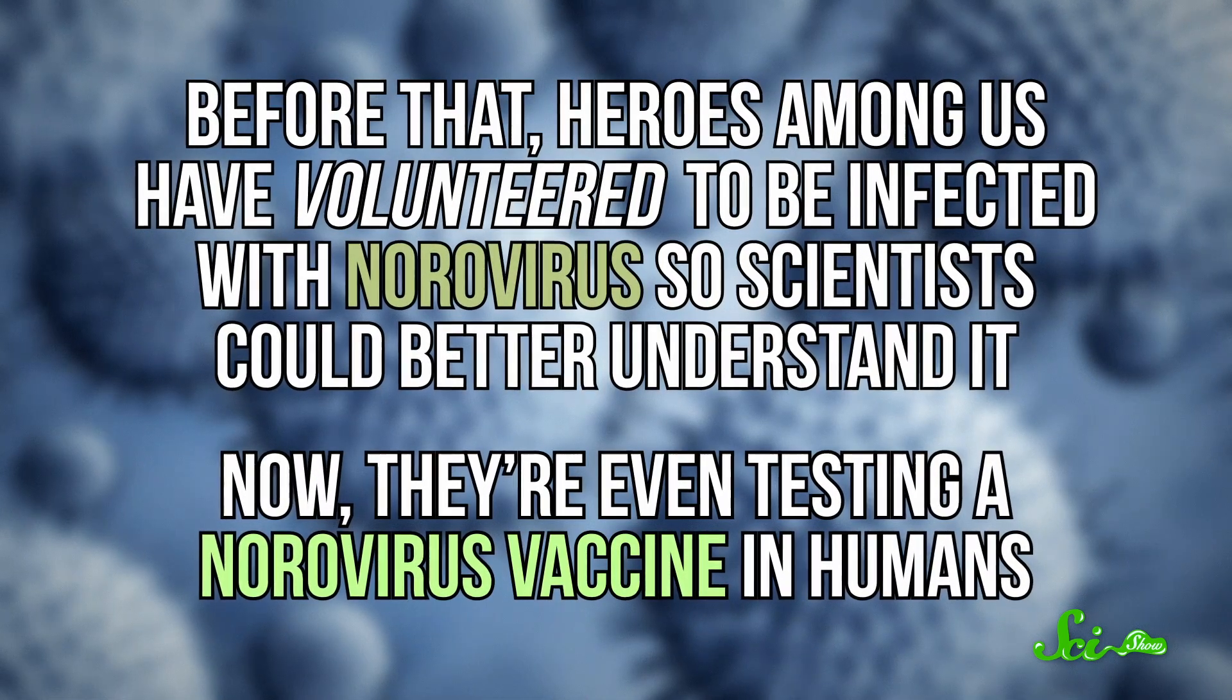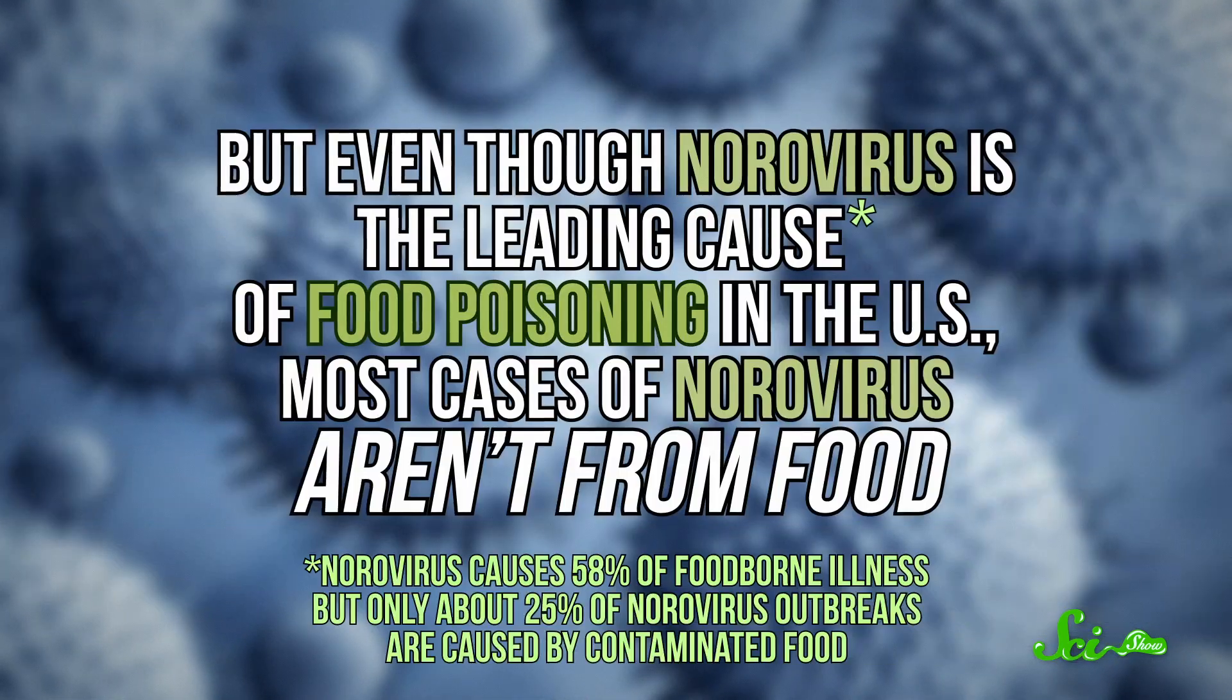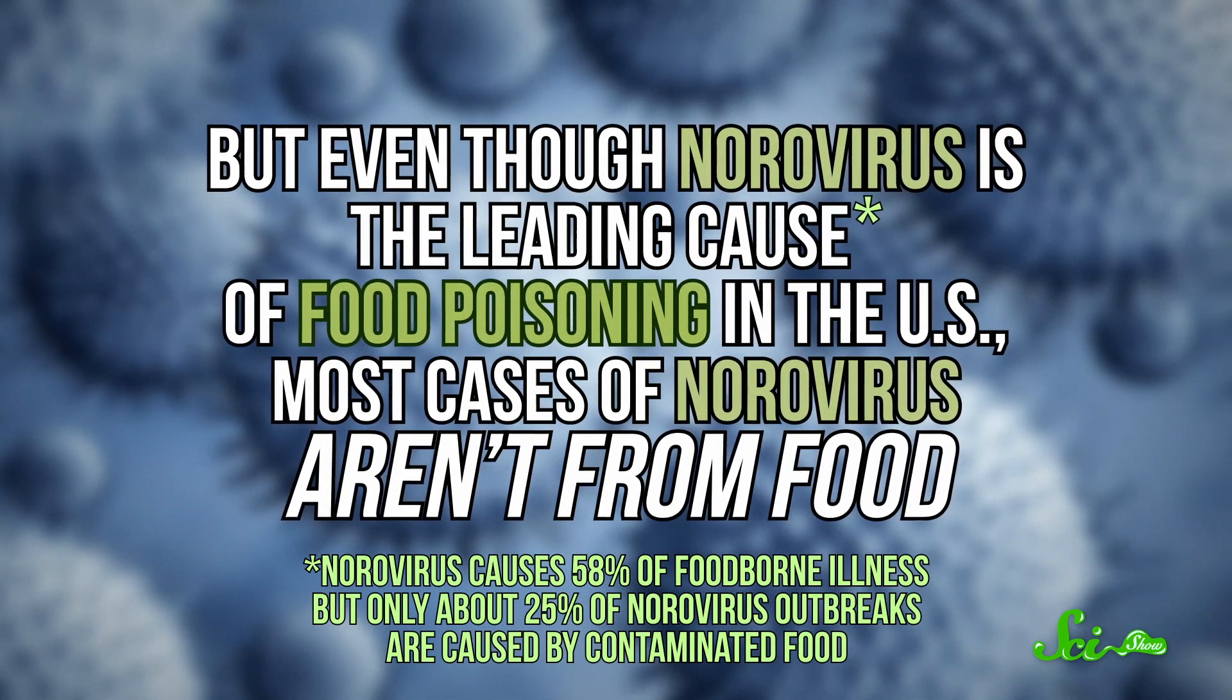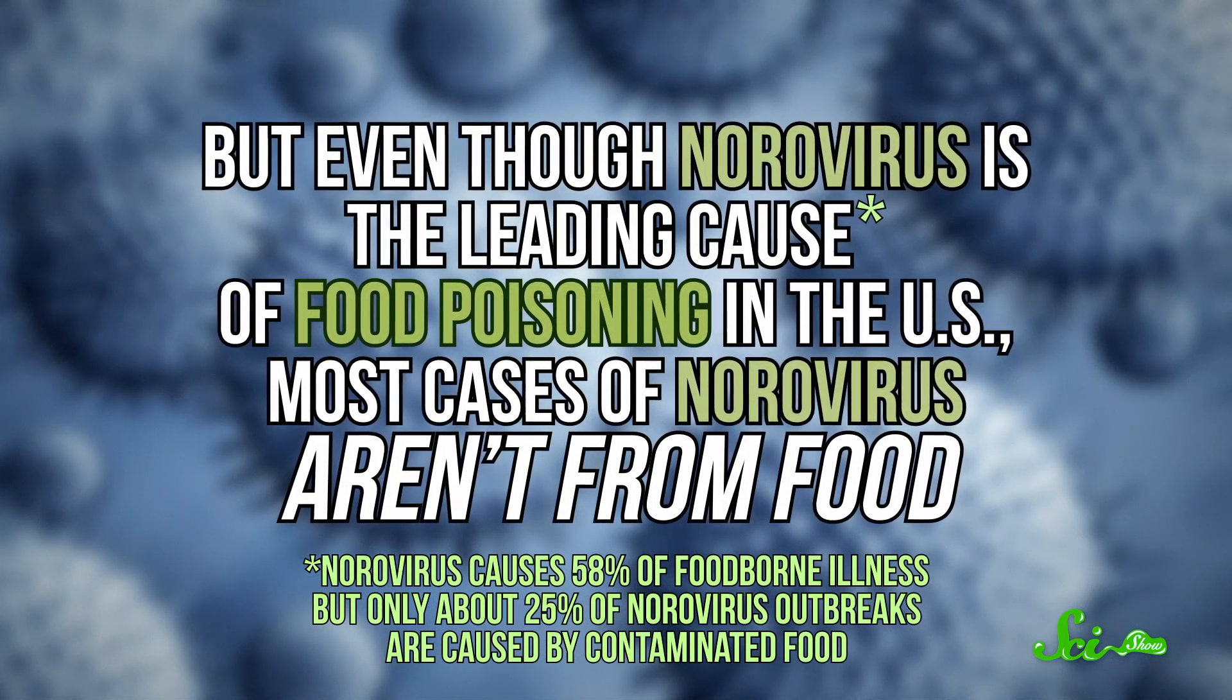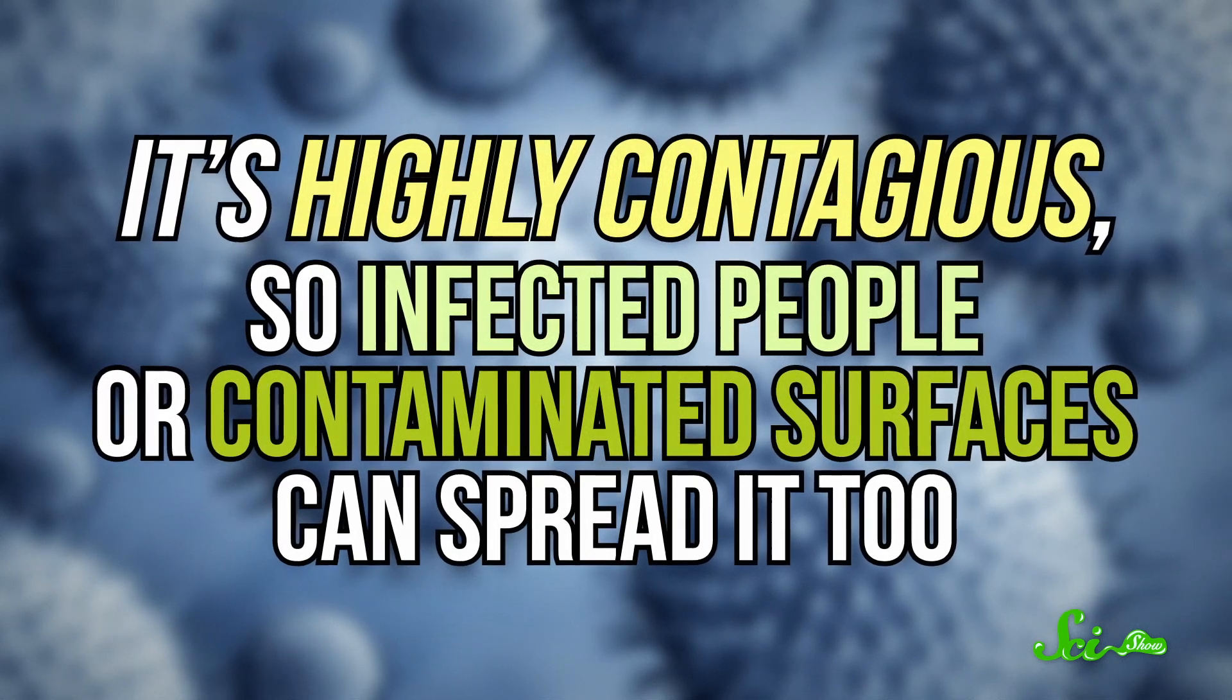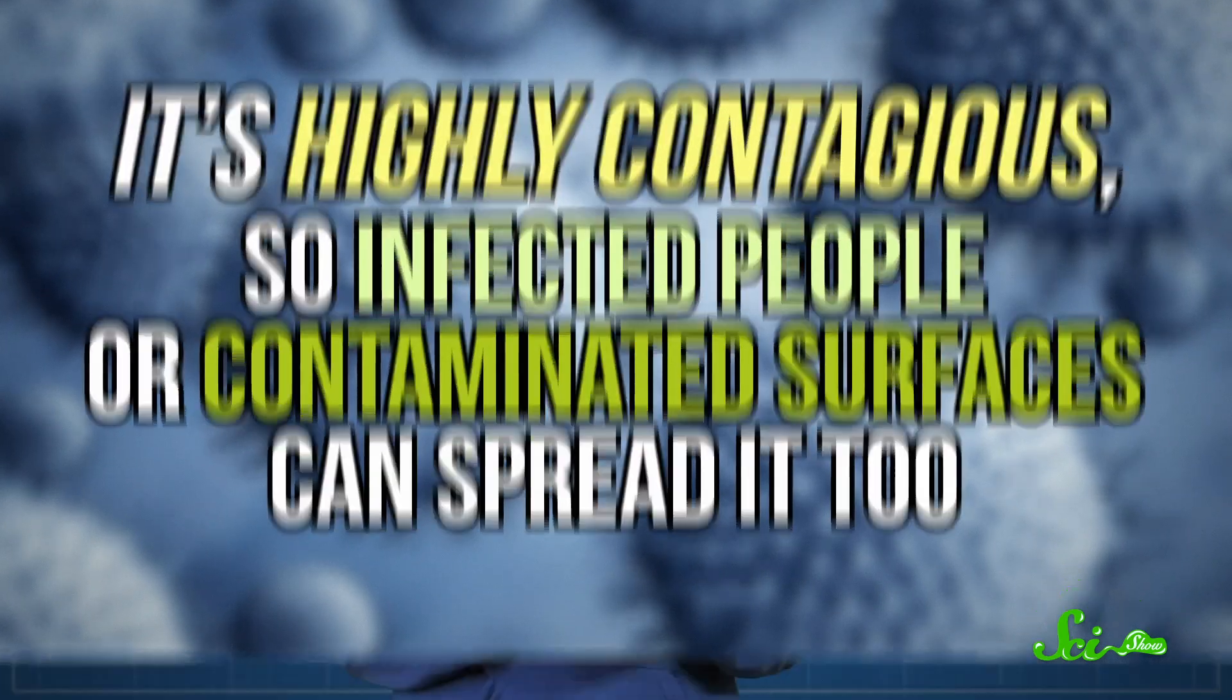Now they're even testing a norovirus vaccine in humans. But even though norovirus is the leading cause of food poisoning in the U.S., most cases of norovirus aren't from food. It's highly contagious, so infected people or contaminated surfaces can spread it, too. And it's commonly called a stomach bug or stomach flu, even though norovirus isn't related to the influenza virus.